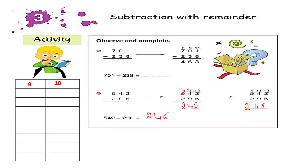If we want to subtract 1 from 10 the answer will be 9. 20 minus 1 is equal to 19. If we want to subtract 1 from 30 the answer will be 29. Subtract 1 from 40 gives 39, from 50 gives 49, from 70 gives 69, 80 minus 1 is 79, 90 minus 1 is 89, and 100 minus 1 is equal to 99.